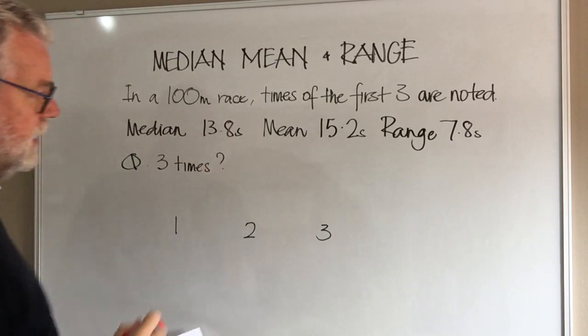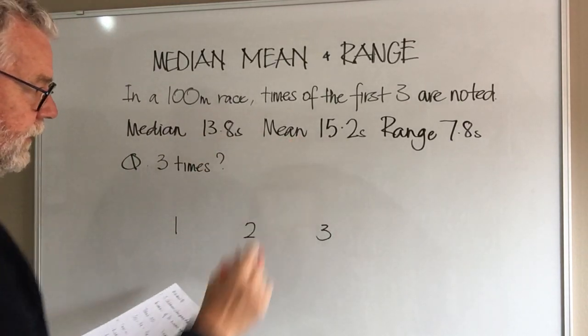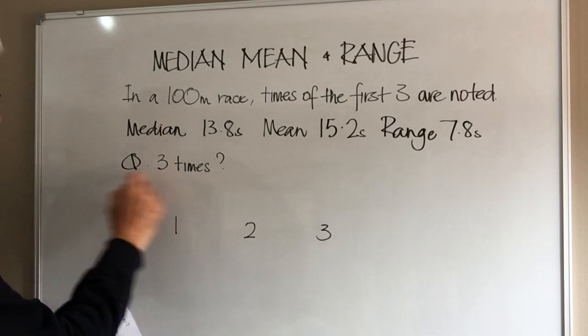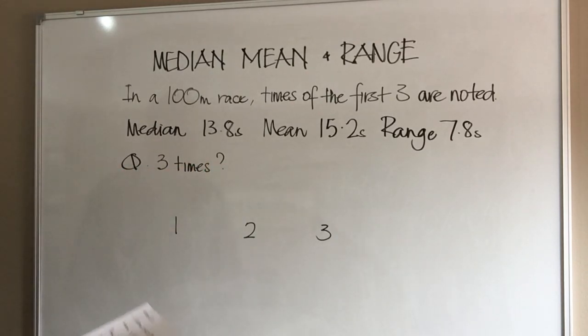The median is 13.8 seconds, the mean is 15.2 seconds, and the range is 7.8 seconds. We're asked: what are the three times?